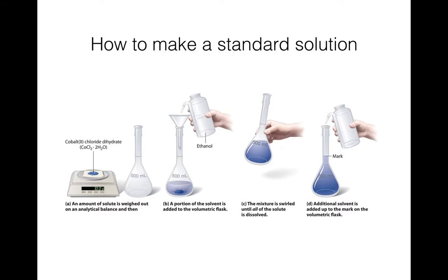In the chemistry lab, the way you make a solution, you want to make sure you know its concentration and make a very specific concentration of the solution you want. You would measure out the amount of your solute — in this case a solid — and put it in what's called a volumetric flask. This piece of glassware has one calibration line, so it's very exact, which tells you how high to fill it to a certain volume. In this case, it's a 500 milliliter volumetric flask.